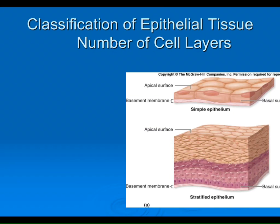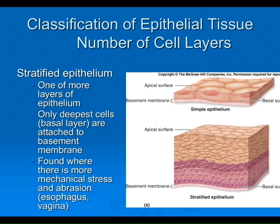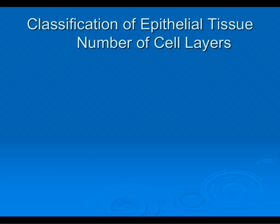Protection is the job of stratified epithelia, which have two or more layers. The bottom layer is directly attached to the basement membrane, and the other layers divide and move toward the apical surface. With many cell layers, this is more protective. You find stratified epithelia in your epidermis, lining your oral cavity, esophagus, anus, and vagina — all places with abrasion, mechanical stress, and a need for extra protection.